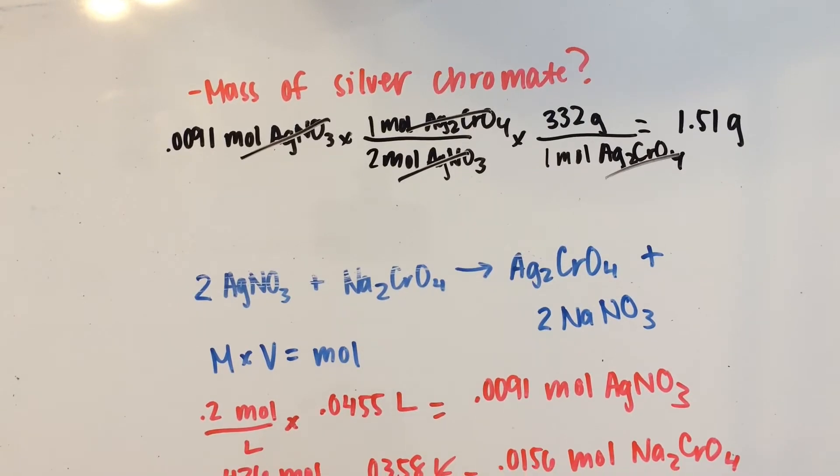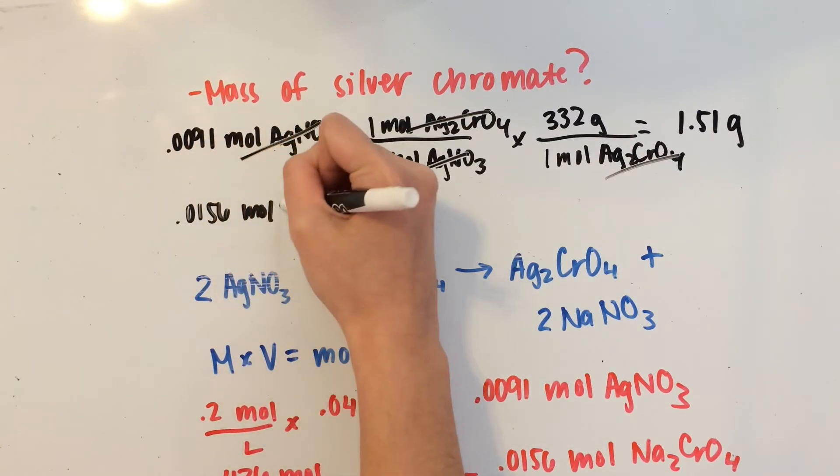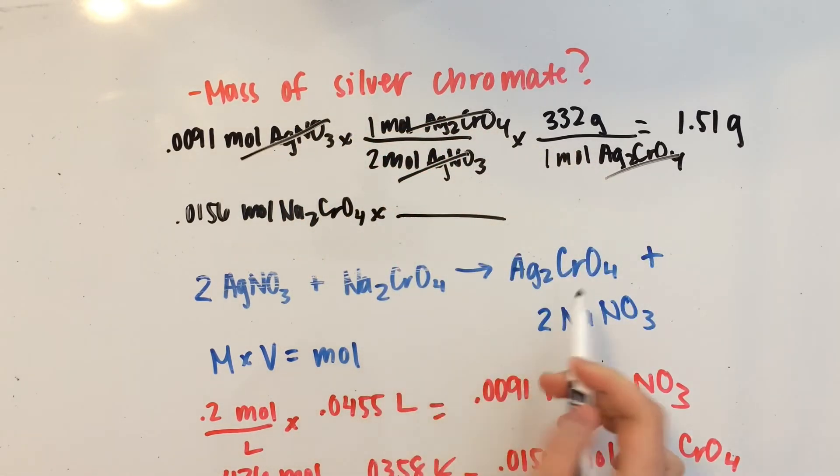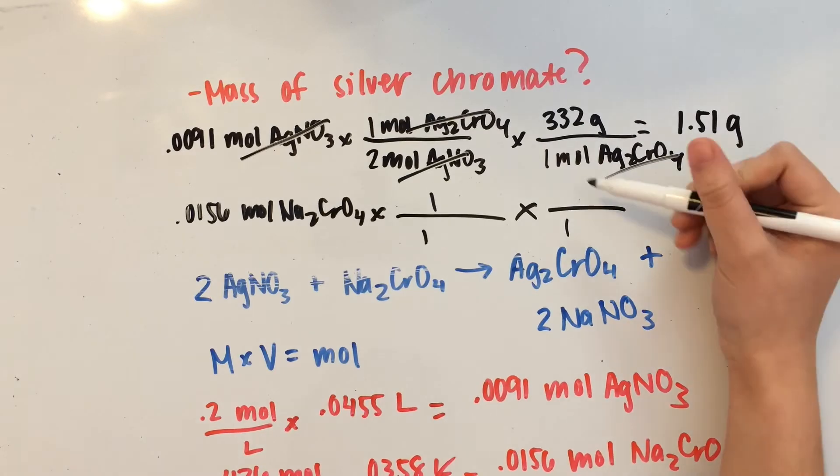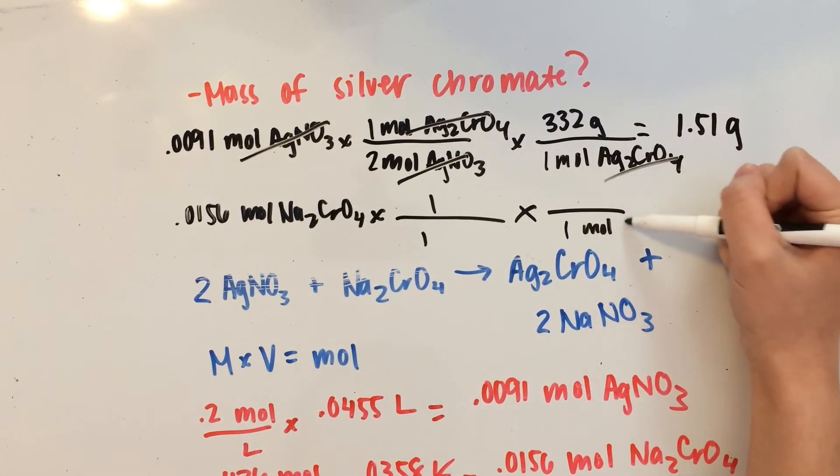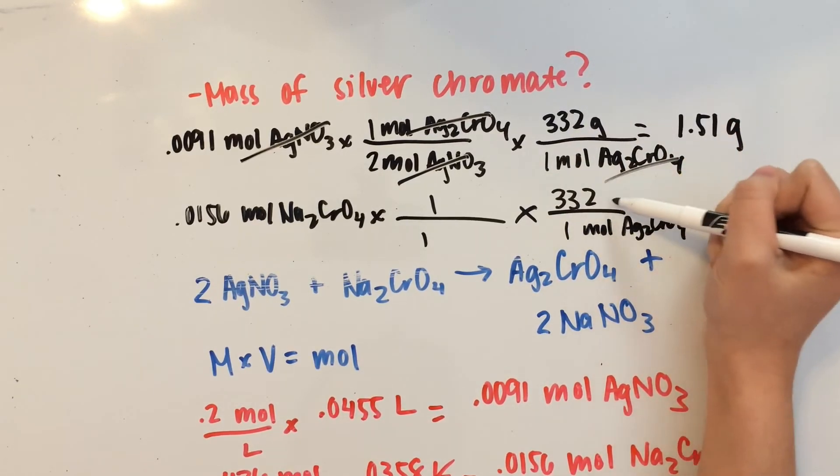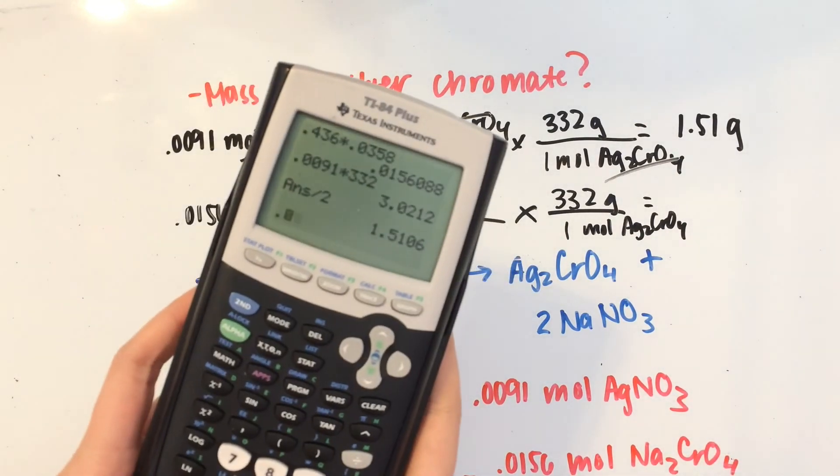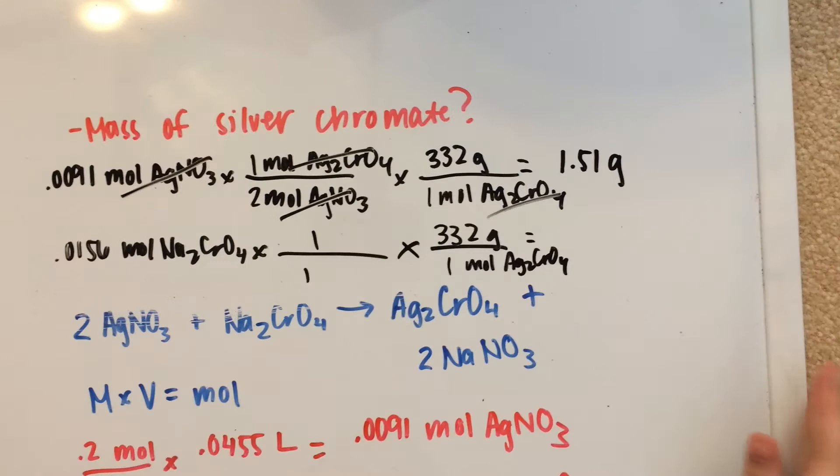So let's do the same thing with Na2CrO4. So we have 0.0156 moles of that. Use the balanced equation again. It's a 1 to 1 ratio, and we'll use the molar mass. And since this is going to be Ag2CrO4 again, we're just going to use the same amount, 332 grams. So that's basically 0.0156 times 332. That gives us 5.18 grams of silver chromate.